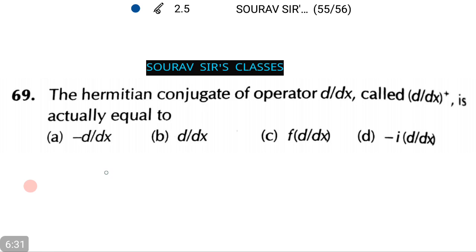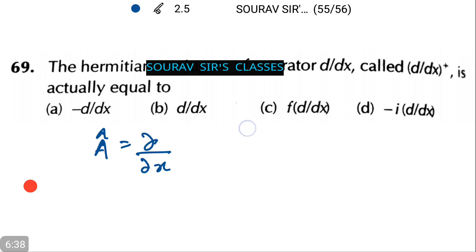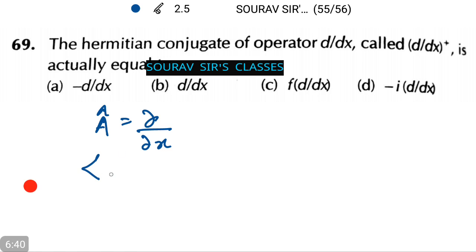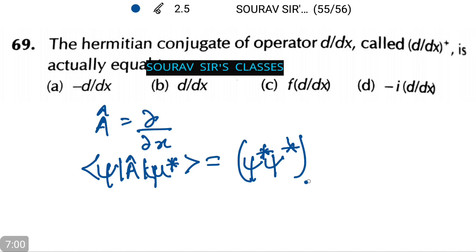Let us see. Given the operator A = d/dx. Therefore, ψ|Â|ψ* equals ∫[ψ*(d/dx)ψ]* from minus infinity to plus infinity